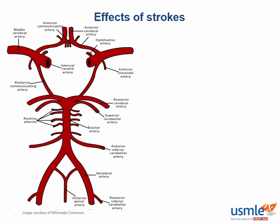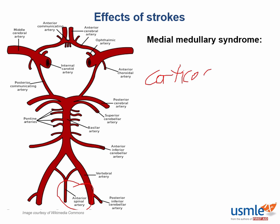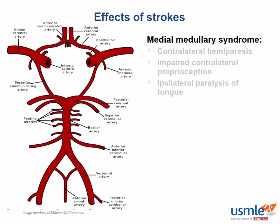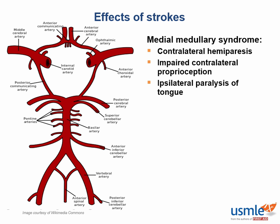Now we'll move on to the posterior circulation, where we encounter the medial and lateral medullary syndromes. The medial medullary syndrome is caused by a lesion in the anterior spinal artery, or ASA, which runs medially and ventrally. Infarction of the ASA affects the corticospinal tracts before they decussate in the medullary pyramids, the medial lemniscus as it travels from the spinal cord to the thalamus, and cranial nerve 12. What we'd see is contralateral hemiparesis, impaired contralateral proprioception, and ipsilateral paralysis of the tongue. The tongue deviates to the side of the lesion, which can help you localize the lesion to a specific hemisphere.